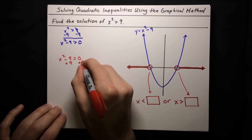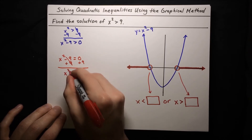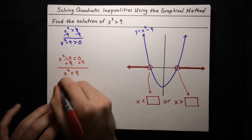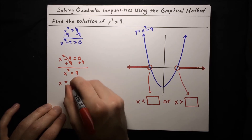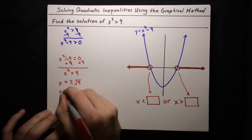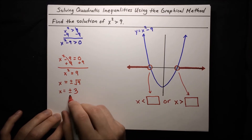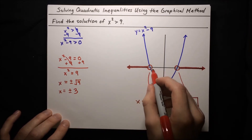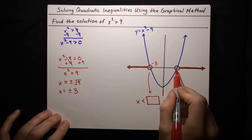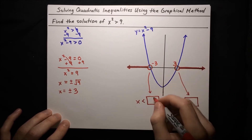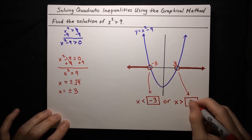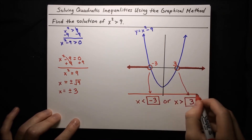The easiest way to solve that is moving the 9 back to the other side: x squared equals 9, and then taking the square root of both sides gives us x equals plus or minus the square root of 9. So x equals plus or minus 3. That tells us our roots — the left root is negative 3 and the right root is positive 3. So we just plug that into the inequality template: x is less than negative 3, or x is greater than positive 3. That is our result.